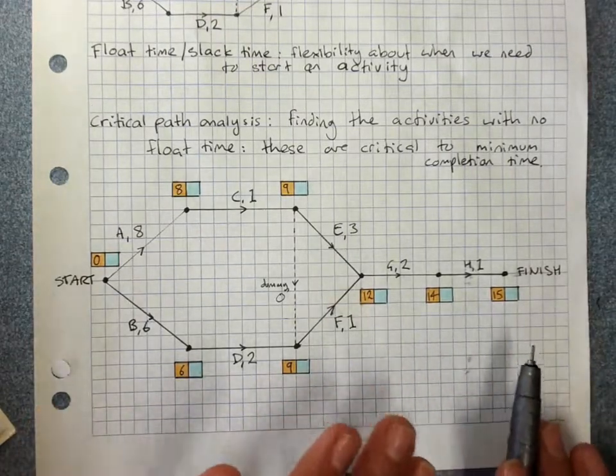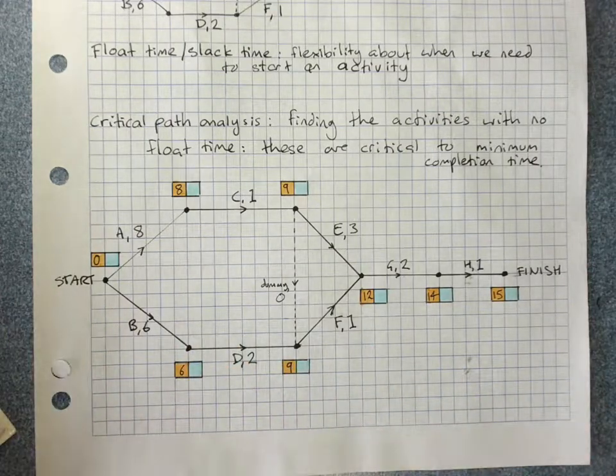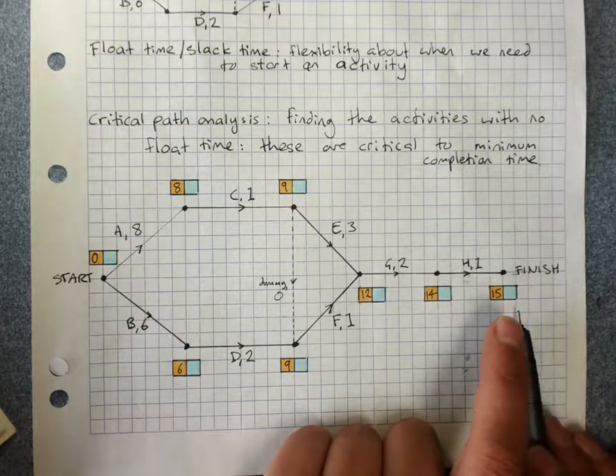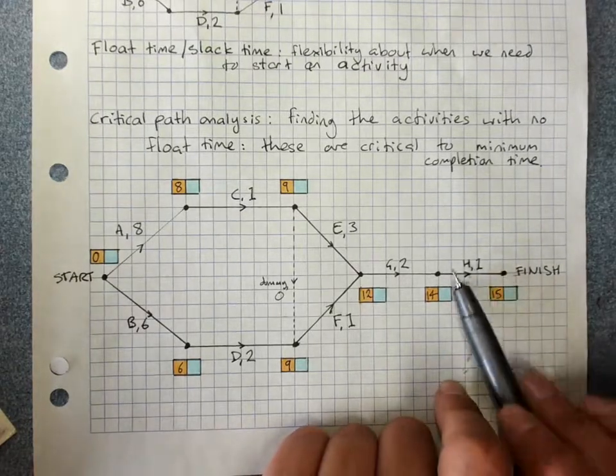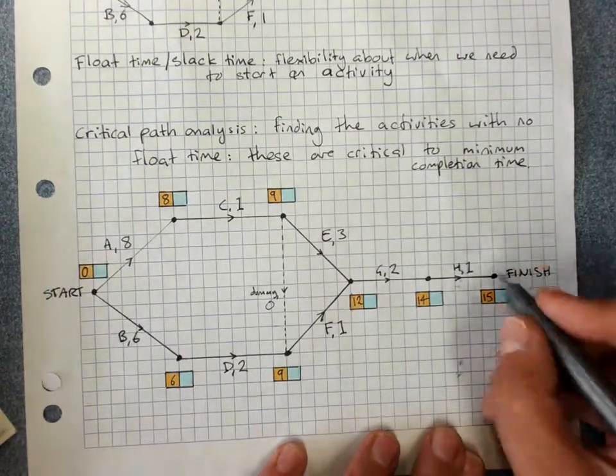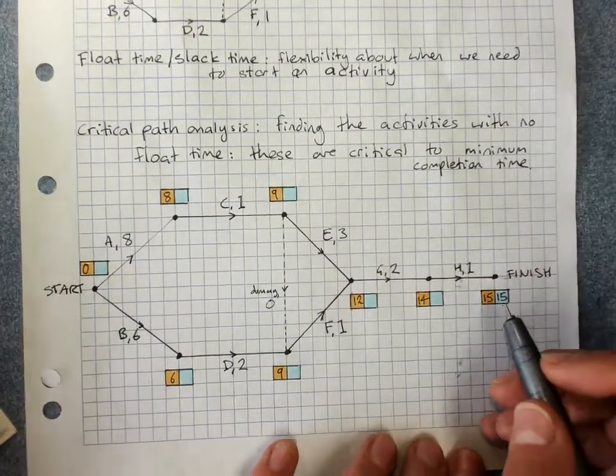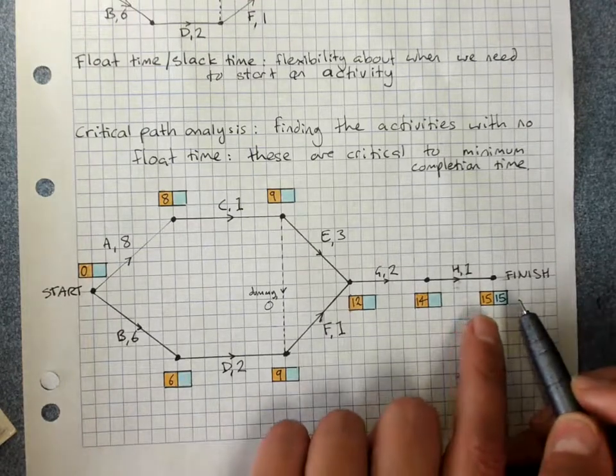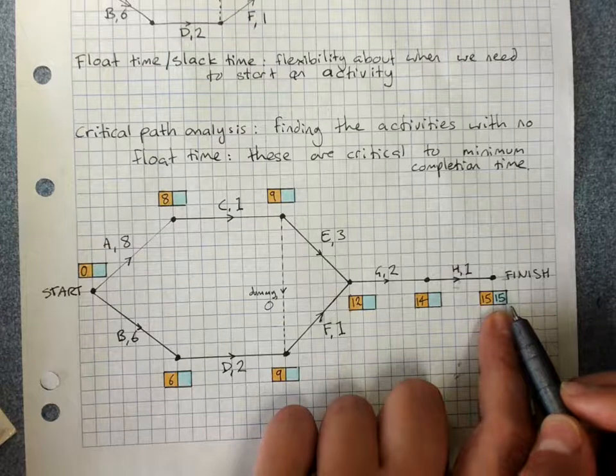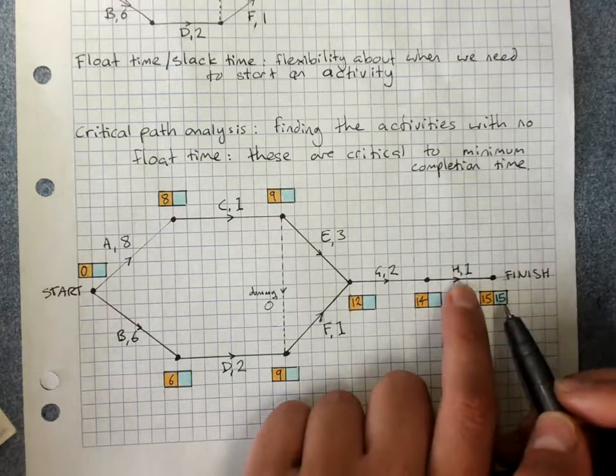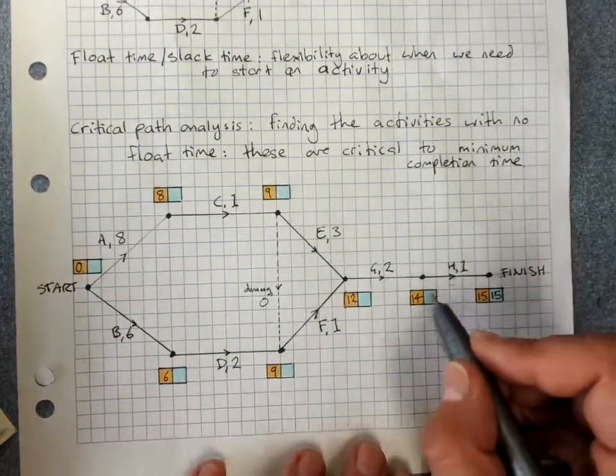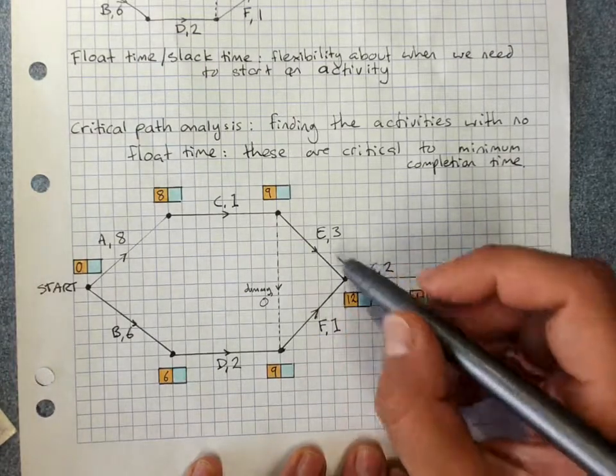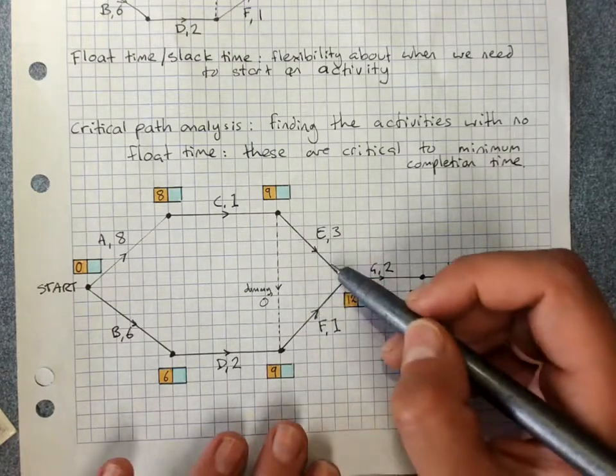Now, to find out some more information, we do backwards scanning in the blue box. The right-hand cell, the blue box, contains the latest finishing time, LFT, for any activity that ends at this vertex. We start with 15, because the latest finishing time, really ideally, would be 15 for this. For each activity, we take the latest finishing time, and we subtract the duration of our activity, and we write our answer in. So obviously, the latest we can finish G is at 14 hours. The latest we can finish E and F is 12.